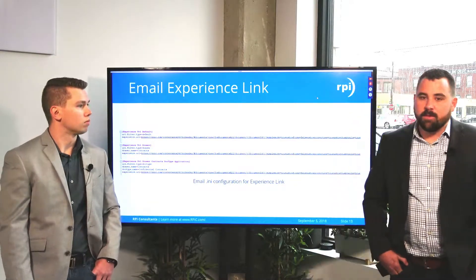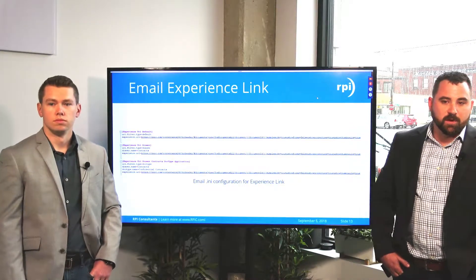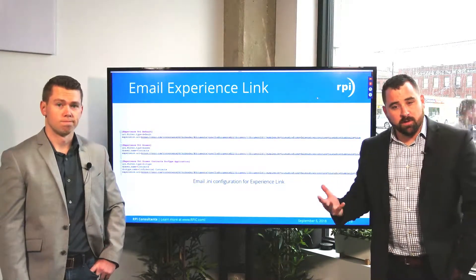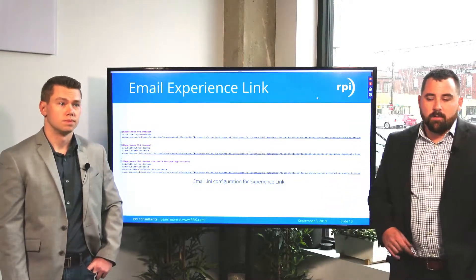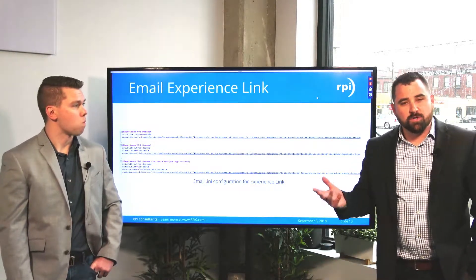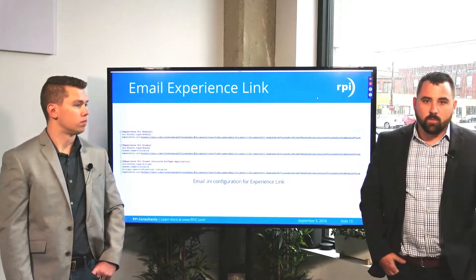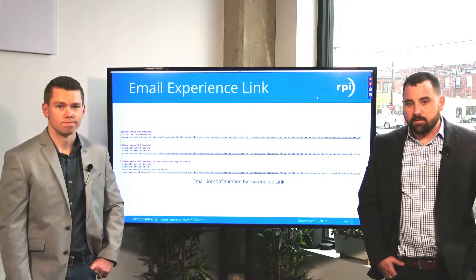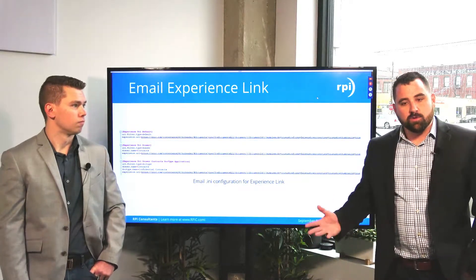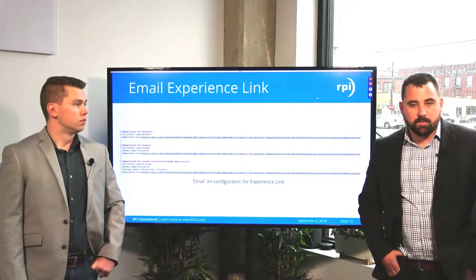An example use case: if you're going to email a link to an AP invoice document, you may want to configure the user experience for that Content Apps link to include an e-form showing the GL coding lines of an invoice. For a different document type, maybe you don't want to show a form or properties — just the image and what the user can do with it: export it, download it, route it forward. This allows you to tailor that user experience based on drawer and document type for different areas of the business using Perceptive Experience.